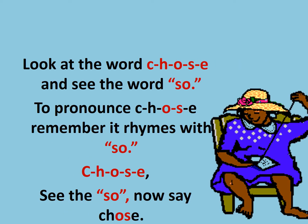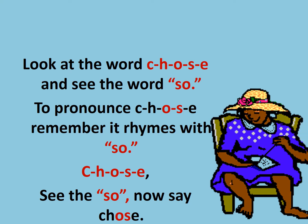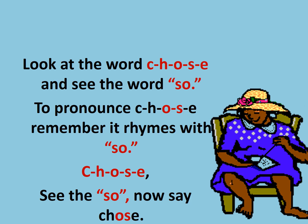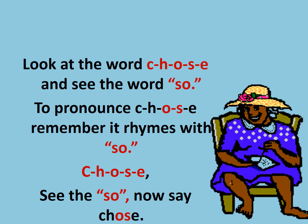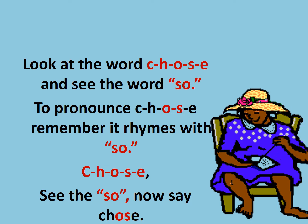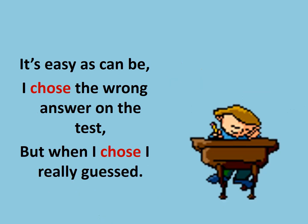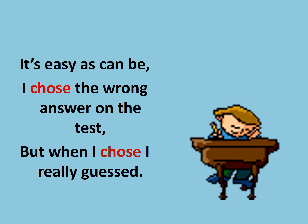Look at the word C-H-O-S-E and see the word 'so'. To pronounce C-H-O-S-E, remember it rhymes with 'so'. C-H-O-S-E — see the 'so'? Now say: chose. It's easy as can be. I chose the wrong answer on the test, but when I chose, I really guessed.